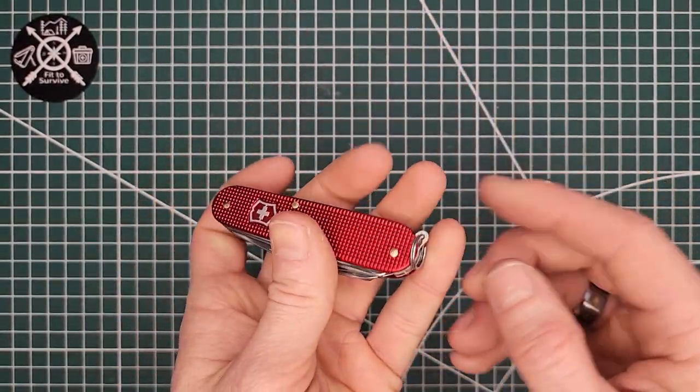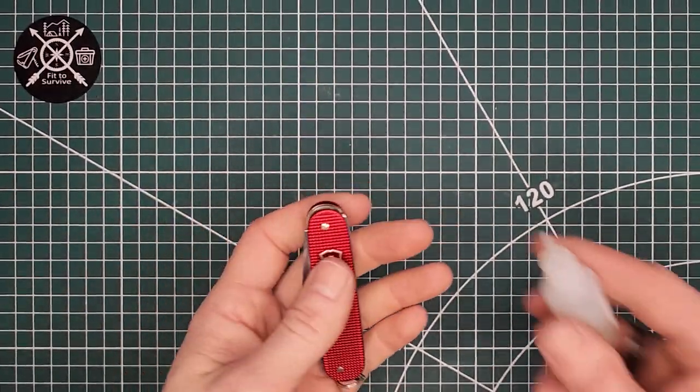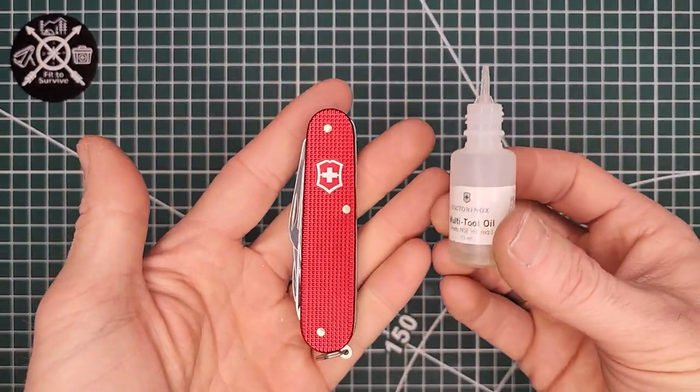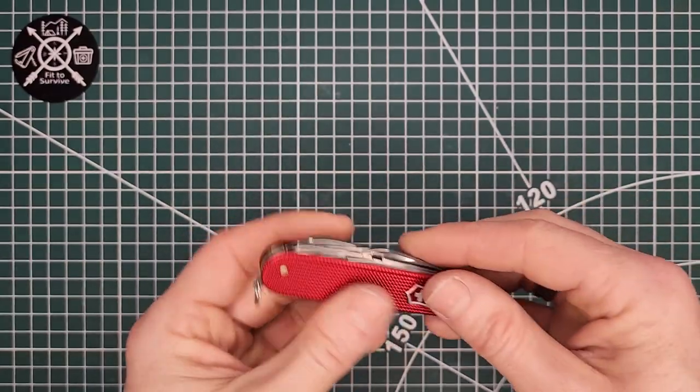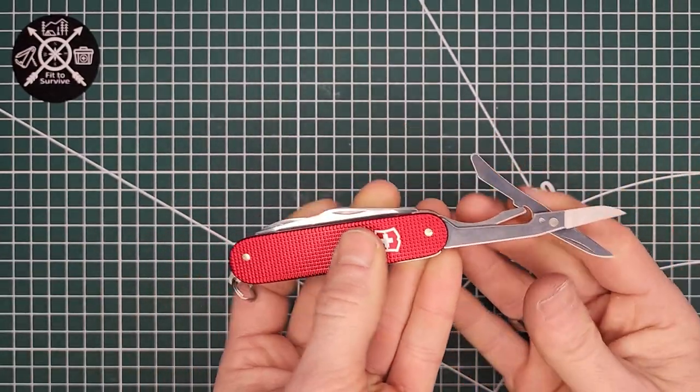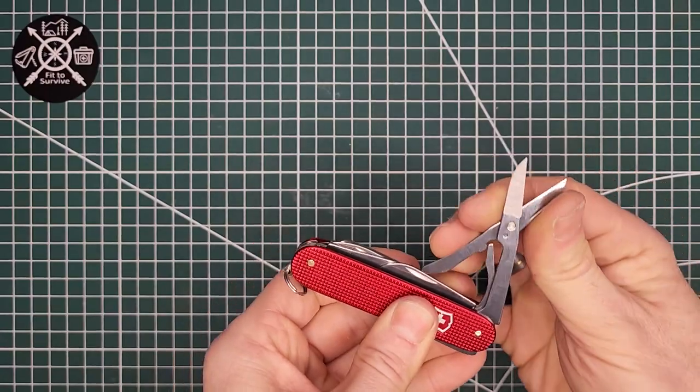And so I've already, as you can see, I've put on the keychain ring and I've already put a drop of oil on all the pivots here. So let's go ahead and go through one more time. I'll show you the action of the tools. See that, it's still nice and snappy.